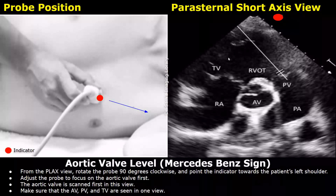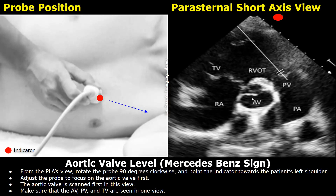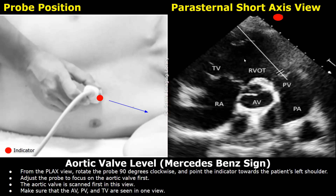Now we will look at the parasternal short axis views at different levels. The first level scanned is the aortic valve level, considered the starting point for short axis views. From the parasternal long axis view, rotate the probe 90 degrees clockwise to point the indicator towards the patient's left shoulder, then adjust with small sweeps, rotations, and angulations. You will see the aortic valve in the center — its cusps give an appearance similar to the Mercedes-Benz logo, called the Mercedes-Benz sign. The right atrium is to the left of the aortic valve, above which is the tricuspid valve, followed by the right ventricular outflow tract and pulmonary artery. The pulmonary valve is also seen here.